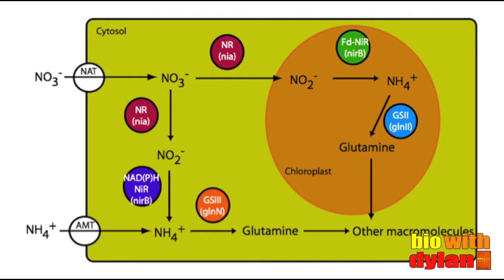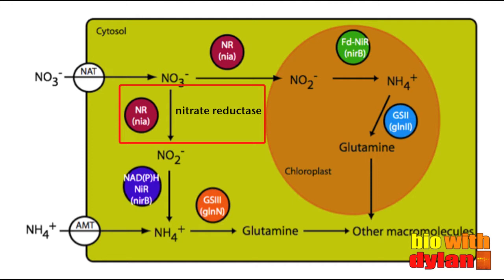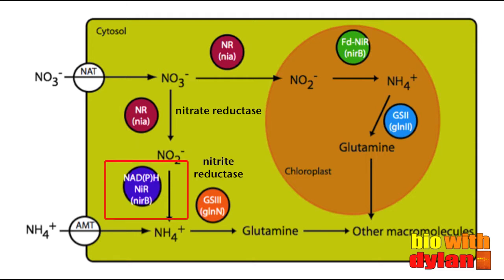Previously, I made plasmids to look at the activity of nitrate reductase, or NR. NR works in the cytosol to reduce nitrate to nitrite. NR's friend, NIR, or nitrite reductase, then reduces nitrite to ammonium. You may notice there are two forms of NIR working in the cell. The NIR represented by the dark blue circle works in the cytosol, and the NIR represented by the green circle works in the chloroplast. I'm working to characterize the activity of the cytosolic NIR, the dark blue one.